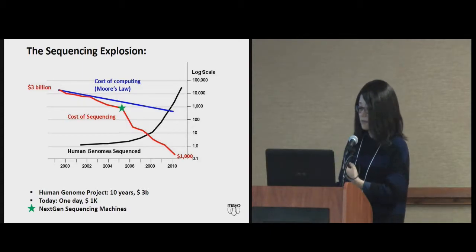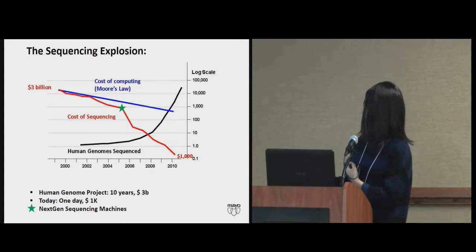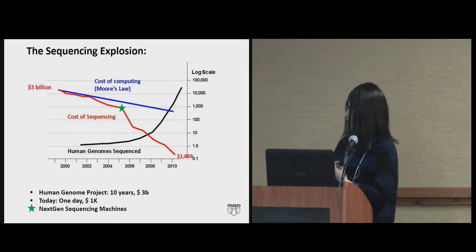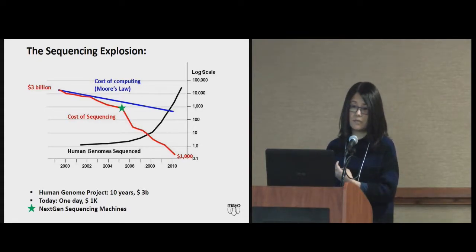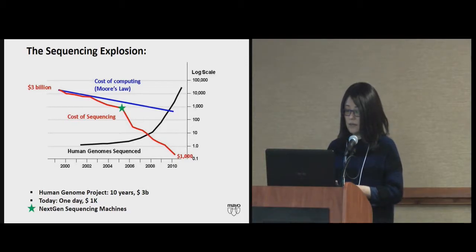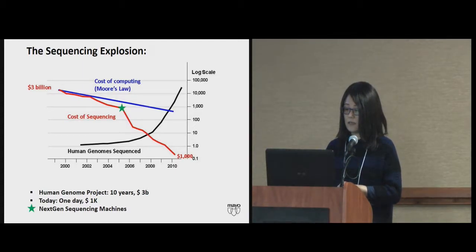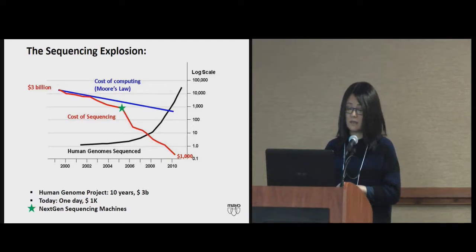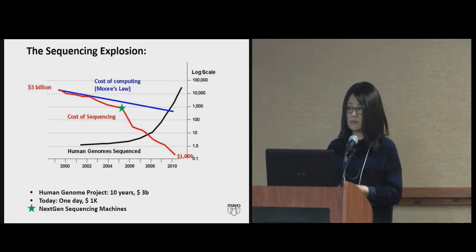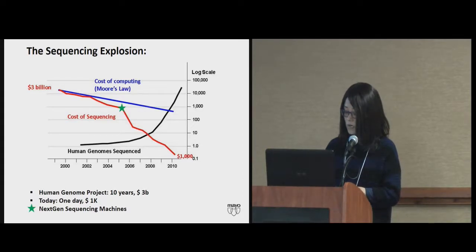The turning point is, of course, the introduction of the NextGen massive parallel sequencing machine in 2005. Because of that, there are really tons of sequencing data now in the public database. This figure is from 2017 — multi-millions of human genome datasets available. And if you look at a smaller scale, like exome sequencing, there's even more data.